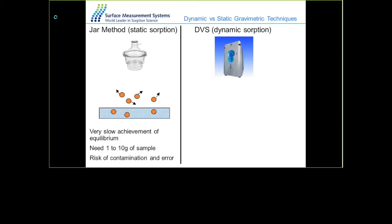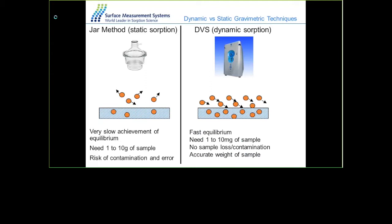The difference between static and dynamic methods is in how molecules interact with the surface. With a static method, there is a limited number of molecules interacting with the surface, which is why equilibrium is established slowly. You also use a larger amount of sample, and there is risk of contamination when removing and weighing the sample. With the dynamic vapor sorption technique, you achieve fast equilibrium through the flow of molecules over the sample — a continuous flow of vapor over the material — giving better diffusion into the system.